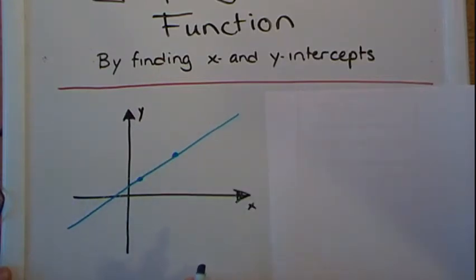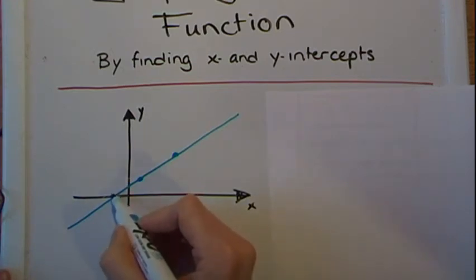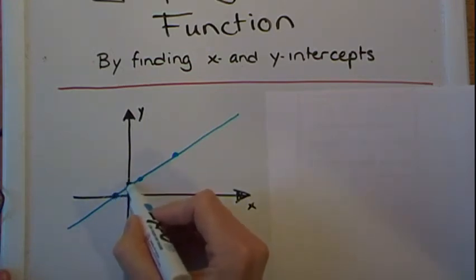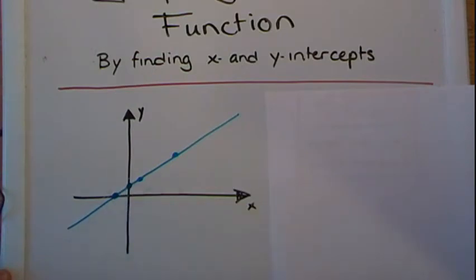Now when graphing a linear function by finding x and y intercepts, what we do is we find the x and the y intercepts. So we find one specific point on the y axis and one specific point on the x axis and then connect the dots.